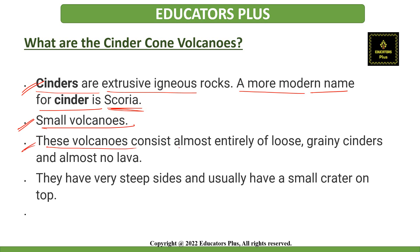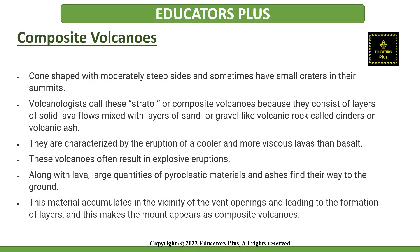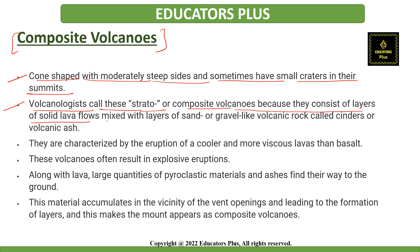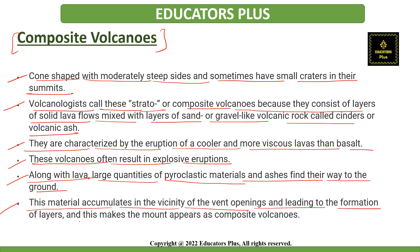Cinder cone volcanoes are small volcanoes. They consist almost entirely of loose, grainy cinders and almost no lava. They have very steep sides and usually have a small crater on top. The next type is composite volcanoes. They have a cone shape with moderately steep sides and sometimes have small craters in their summits. Volcanologists also call these strato or composite volcanoes because they consist of layers of solid lava flows mixed with layers of sand or gravel-like volcanic rock called cinders or volcanic ash. They are characterized by the eruption of cooler and more viscous lava than basalt, and these volcanoes often result in explosive eruptions.